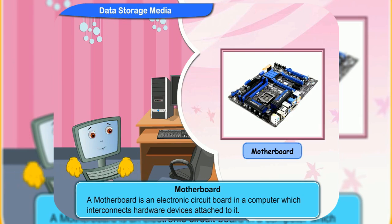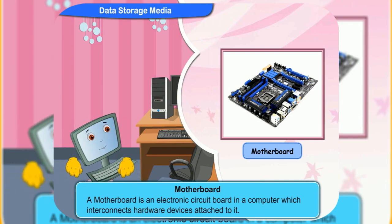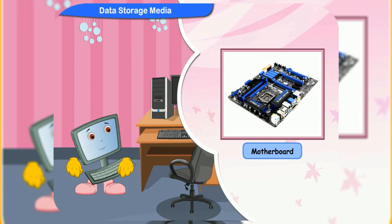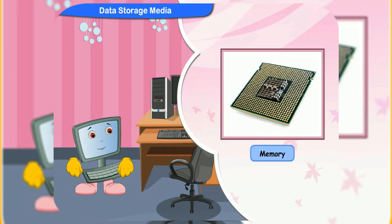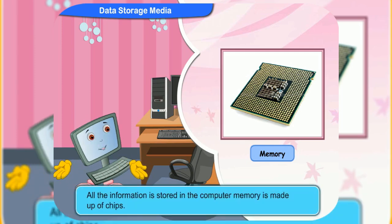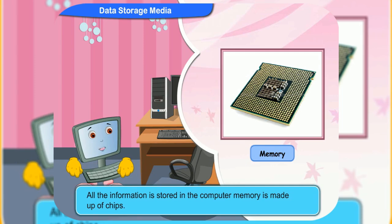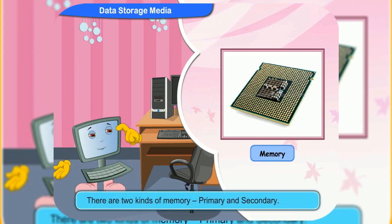A mother board is an electronic circuit board in a computer which interconnects hardware devices attached to it. It means one or more central processing units are attached to the mother board. Let us now look at the memory of a computer. All the information stored in the computer memory is made up of chips. There are two kinds of memory, primary and secondary.